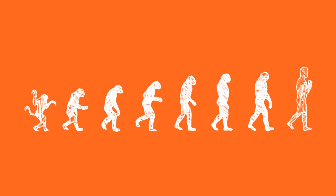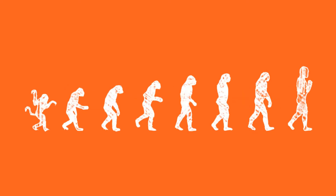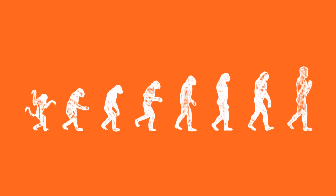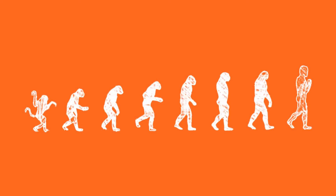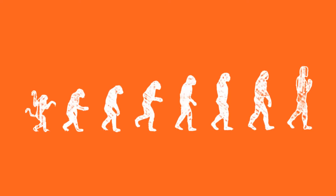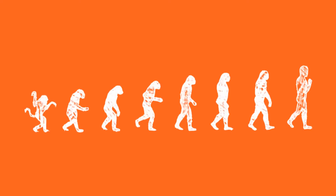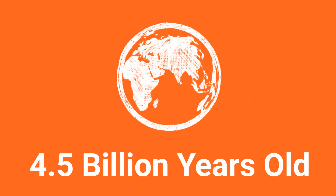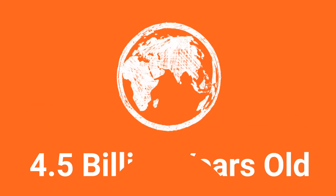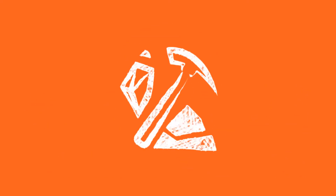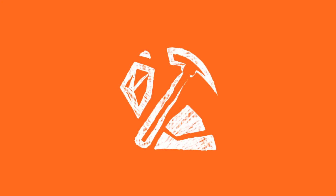Evolution is a scientific theory used by biologists. It explains how living things change over a long time and how they have come to be the way they are. The earth has been around for a very long time. By doing research on the layers of rock, we can find out about its past.